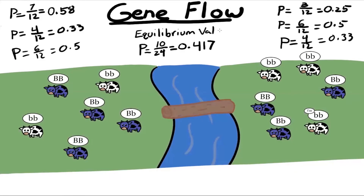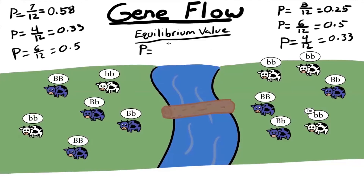The equilibrium value represents the allele frequency each population will eventually reach if they're allowed to migrate indefinitely. When there is an even number of individuals in both populations and an even migration event — in this case two cows moving in each direction — we can use the average of the two allelic frequencies to find the equilibrium value. So P equals (0.58 + 0.25) divided by 2, and we get the same answer. Whenever we have equal populations with equal migration, we can just take the average of the two allelic frequencies.